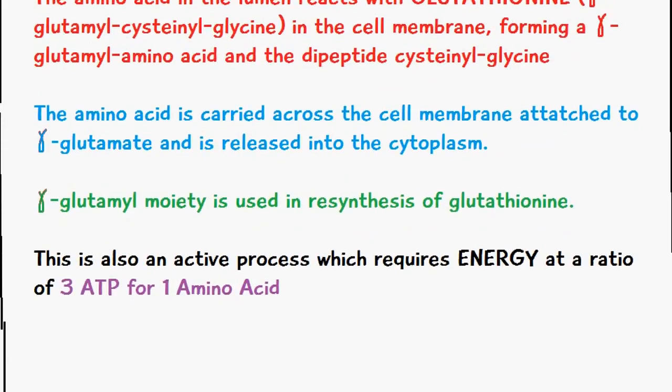The gamma glutamyl moiety which is what's left is used in the resynthesis of glutathione. This is an active process as well which requires energy at a ratio of 3 ATP for one amino acid.